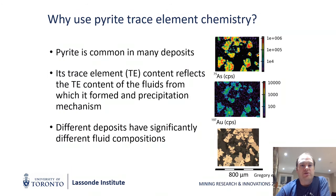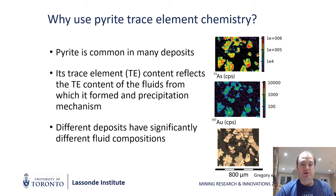So why use pyrite trace element chemistry? Pyrite is common in many different types of deposits. Its trace element content reflects the trace element content of the fluids from which it formed and precipitated, as well as the depositional mechanisms and the co-occurrence of other minerals. Because each deposit will have variations of all these factors, they should also have variations in pyrite trace element chemistry. If that is the case, we should be able to work backwards with our pyrite trace element chemistry to find which deposit a given pyrite came from.